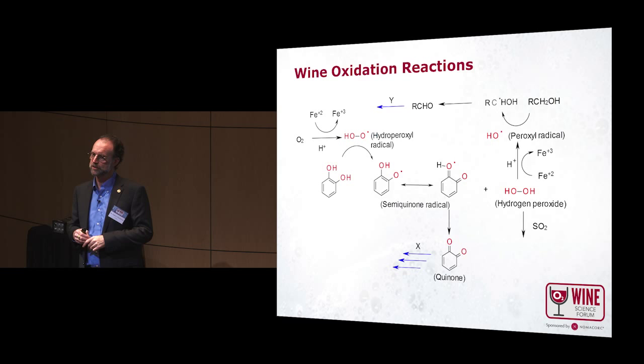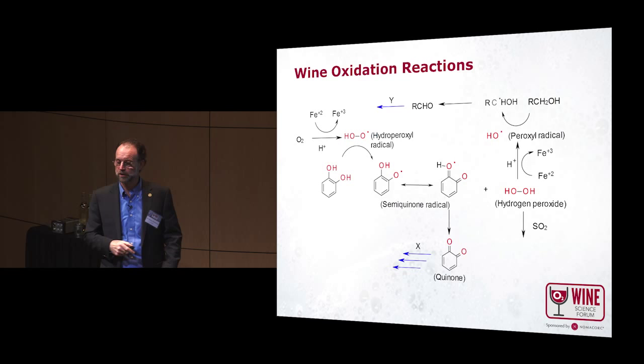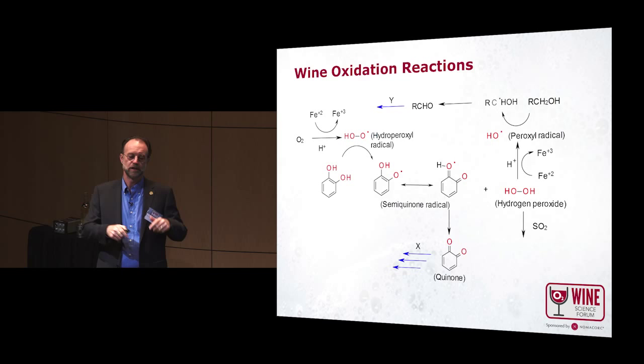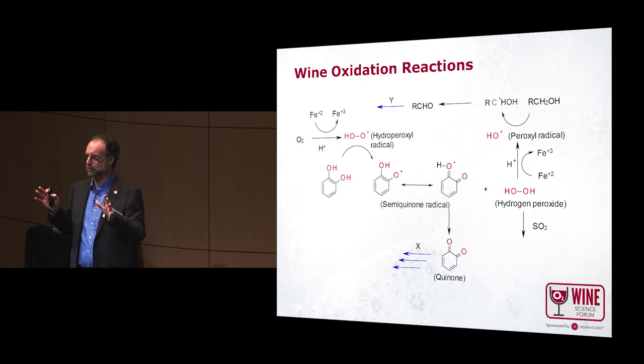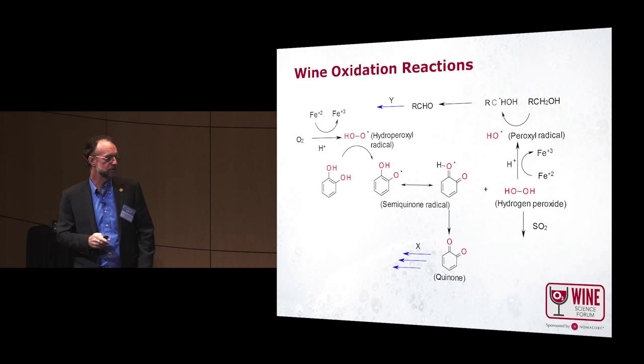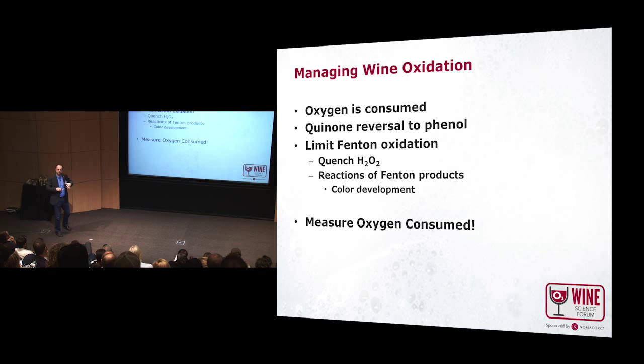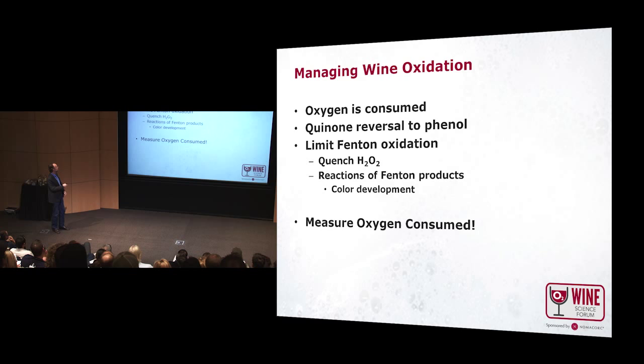SO2 actually reacts with these two key components and essentially reverses the effect of oxygen consumption. It doesn't react directly with oxygen at all — what it does is react with these two key intermediates. And if you remove these completely, you can essentially stop oxidation. So managing it has to do with understanding that we manipulate these steps. When oxygen goes into a wine, we don't just stop reactions by adding a preservative — we're actually having oxygen being consumed. Getting rid of some reductive characters like H2S actually has to do with getting the quinone to react with that.